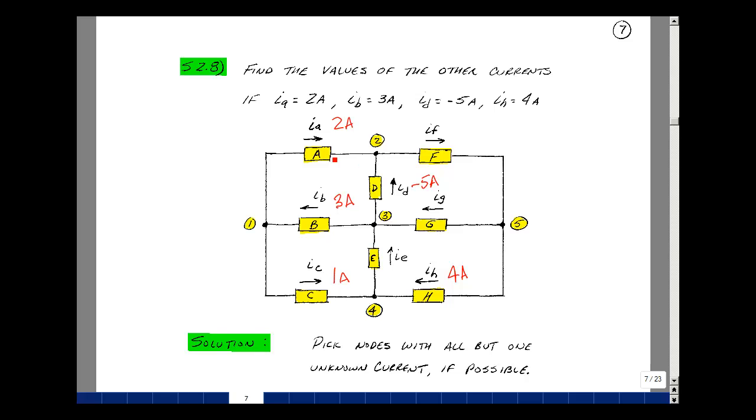If you look at node 2 here, I know this current, I know this current, but I don't know this current. So I can do the same thing again. Have the currents that enter the node equal the currents that leave the node. So what's entering is 2 amps and minus 5, and that equals what's leaving. So 2 minus 5 is minus 3, so this current is a minus 3.